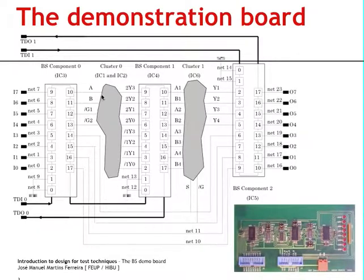We also see two small non-boundary scan clusters, that is to say sets of devices without boundary scan. This first cluster corresponds to the two devices seen here in the photograph, and the second cluster comprises a single device that you see here as well.